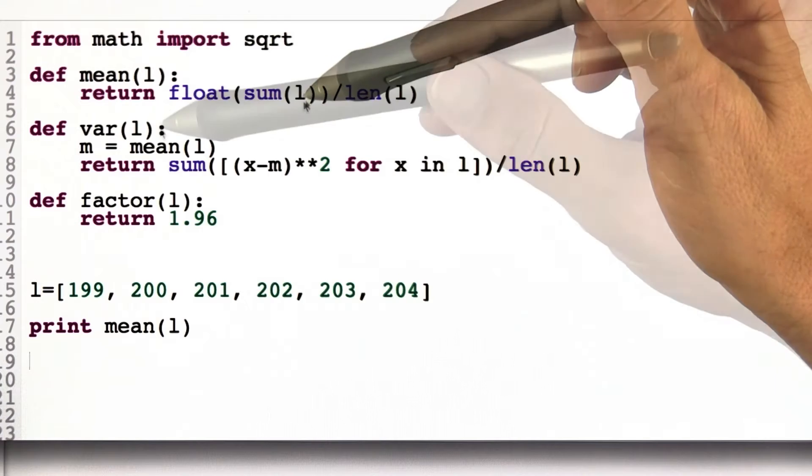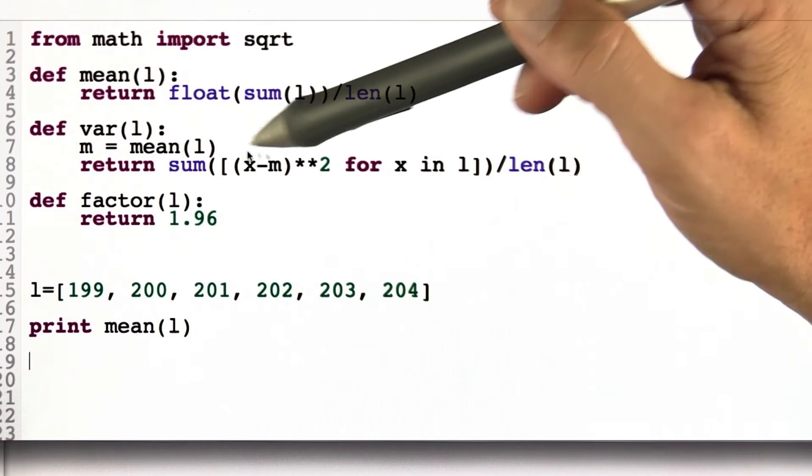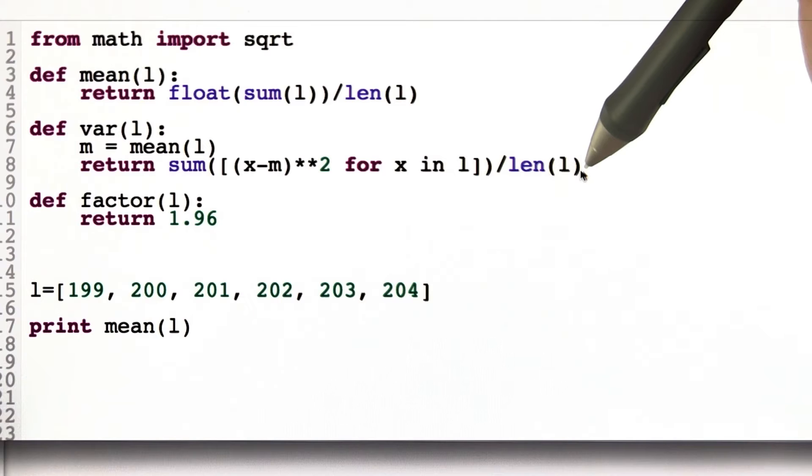But never mind. Then we have a variance function that you programmed before. And here's the variance function in a very compact way.